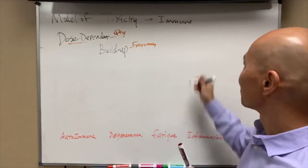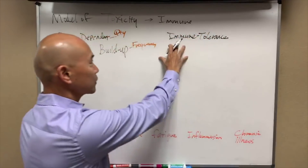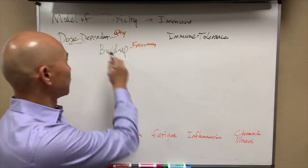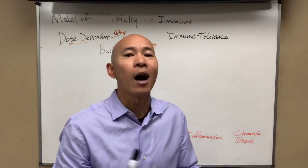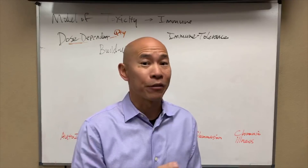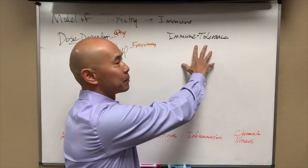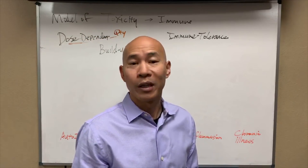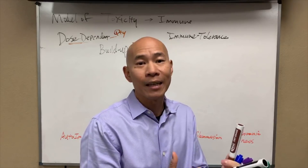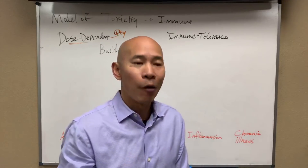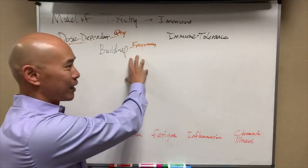A third model is the immune tolerance model. In this theory, it doesn't matter how much toxin you've been exposed to or how long — what matters is what your body is doing with it. Is your immune system reacting to it or tolerating it? That's why some people can smoke their entire life and be fine. This brings in genetics — we can test cytochrome P450 enzyme function and methylation pathways. But genetics is just one aspect; it all depends on the dose, the frequency, and the immune tolerance.